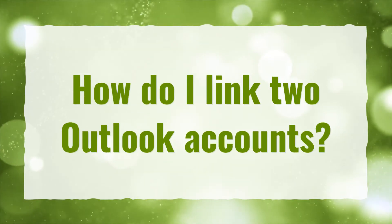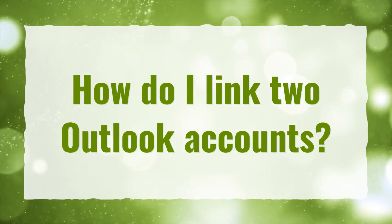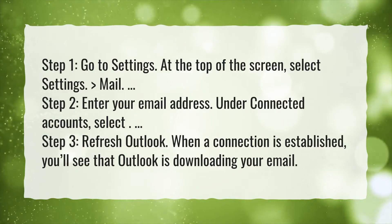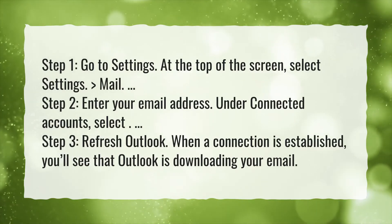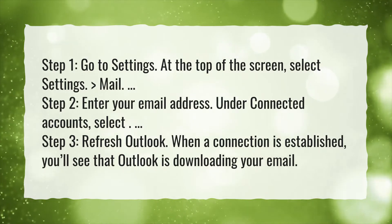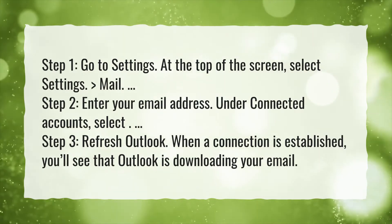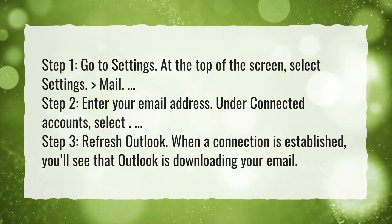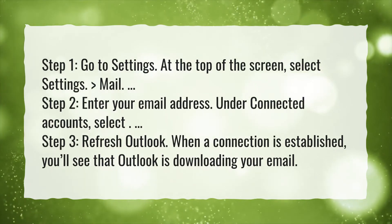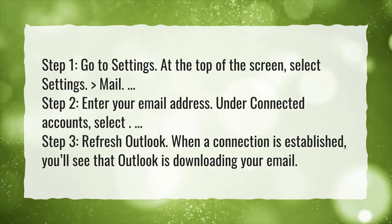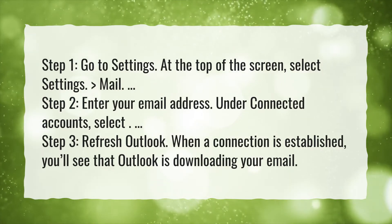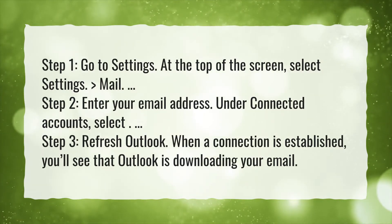How do I link two Outlook accounts? Step 1: Go to Settings. At the top of the screen, select Settings, then Mail. Step 2: Enter your email address. Under Connected Accounts, select. Step 3: Refresh Outlook. When a connection is established, you'll see that Outlook is downloading your email.